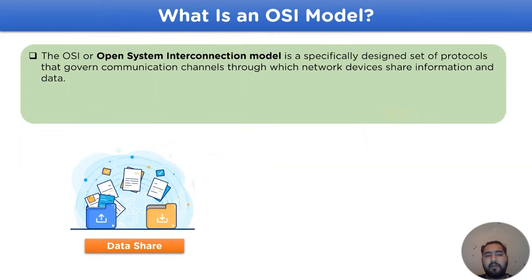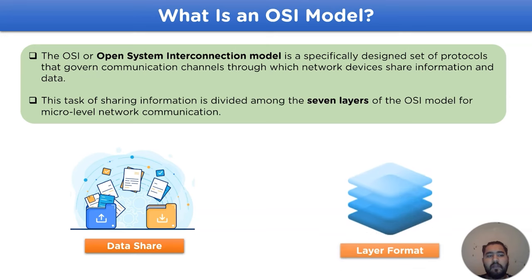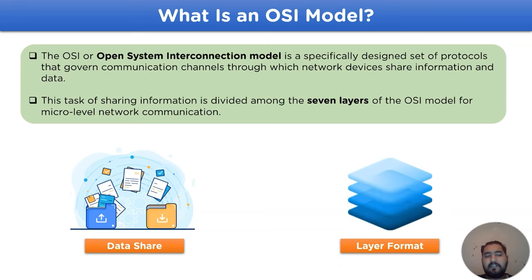The OSI model is a specifically designed set of protocols that govern communication channels through which network devices share input and data. This task of sharing information is divided among seven layers of the OSI model for micro-level network communication.